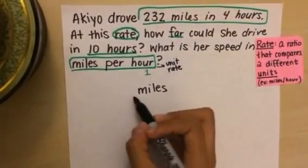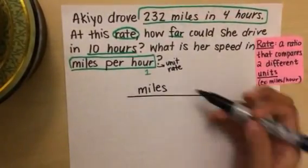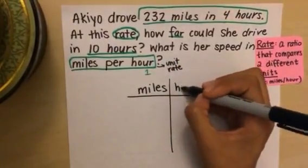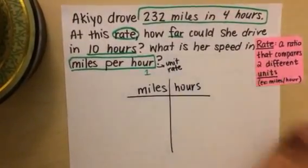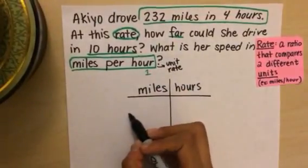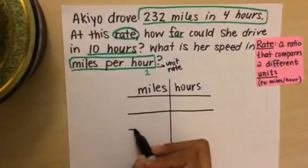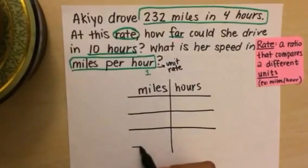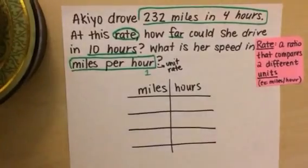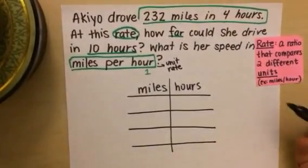My first unit is miles. My next unit is hours. So I just drew a t-chart, miles and hours. And I'm going to use this to make a ratio table. I actually like solving this way better than using proportions, just because it's kind of easier to see everything laid out in one place. All right.